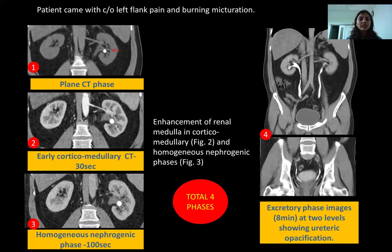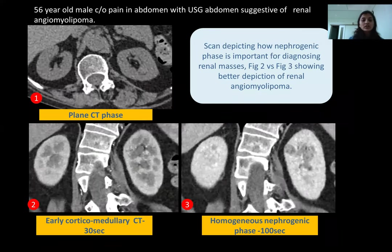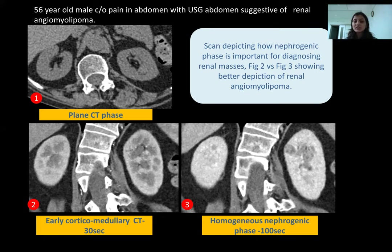An example image shows a plain CT phase revealing a hyperdense calculi in figure 1. An early corticomedullary CT was taken at 30 seconds, then a homogeneous nephrogenic phase at 100 seconds, and an excretory phase image at 8 minutes showing ureteric opacification. Another image shows how the early corticomedullary CT phase at 30 seconds shows less enhancement of renal medulla compared to the homogeneous nephrogenic phase showing enhancement of both cortex and medulla. Hence, lesions in the medulla are well differentiated on the nephrogenic phase, and angiomyolipoma in cortex as well as medulla are better seen on nephrogenic images.